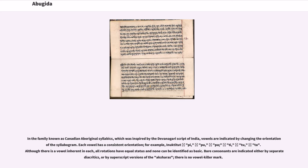In the family known as Canadian Aboriginal syllabics, which was inspired by the Devanagari script of India, vowels are indicated by changing the orientation of the syllabogram. Each vowel has a consistent orientation; for example: pi, pu, pa, ti, tu, ta. Although there is a vowel inherent in each, all rotations have equal status and none can be identified as basic. Bare consonants are indicated either by separated diacritics or by superscript versions of the Aksharas; there is no vowel killer mark.